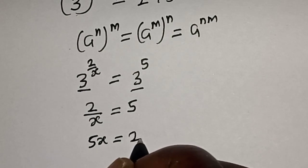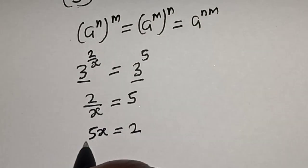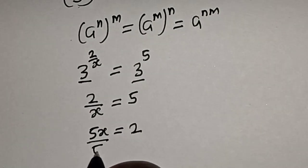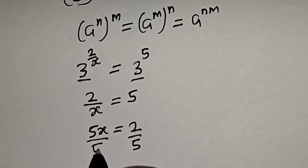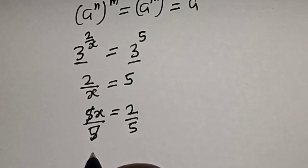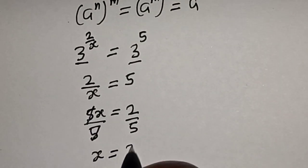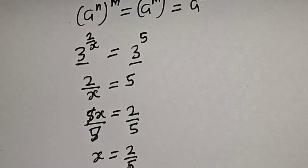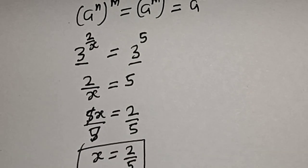Since we are looking for the value of x, divide both sides by 5. This will cancel, and x equals 2 over 5. That is our final answer.